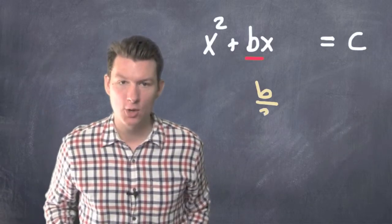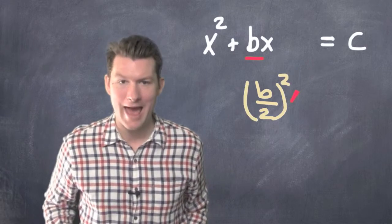The third step for completing the square is to take half the coefficient of the x term, square it, and then add it to both sides of the equation.